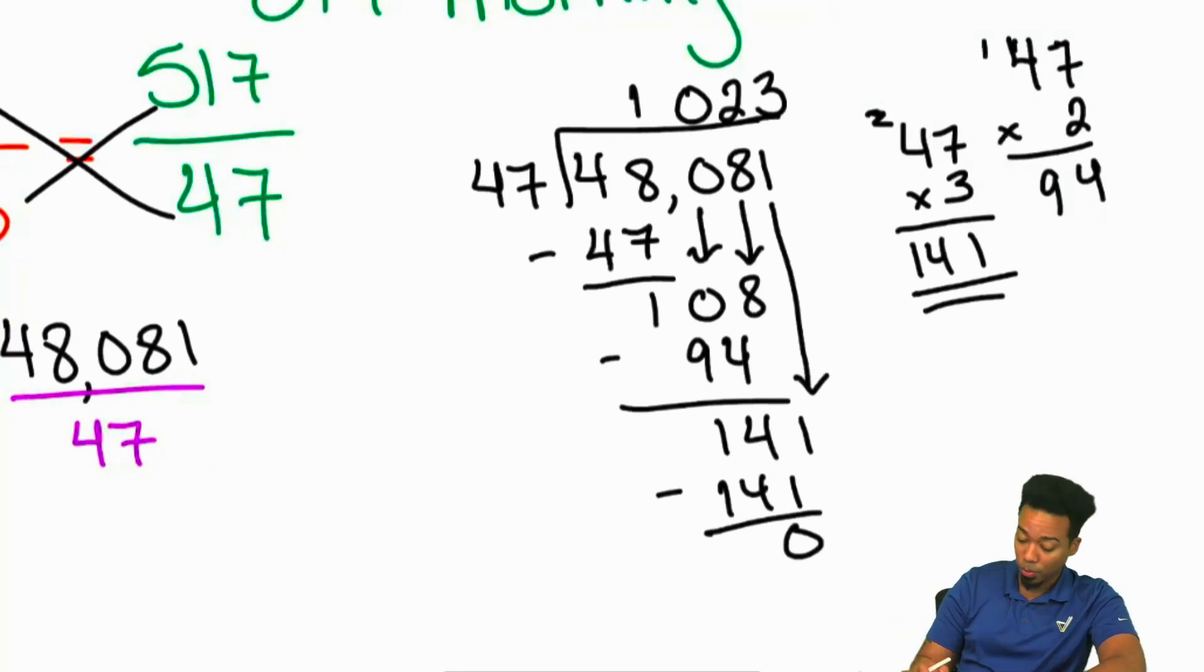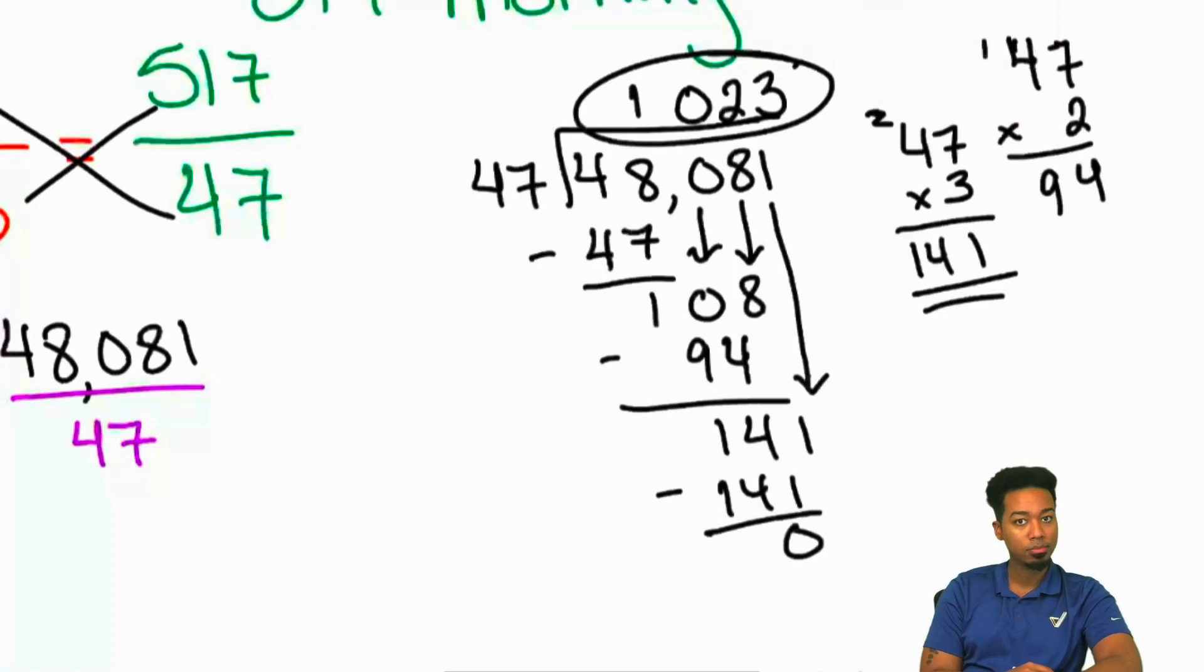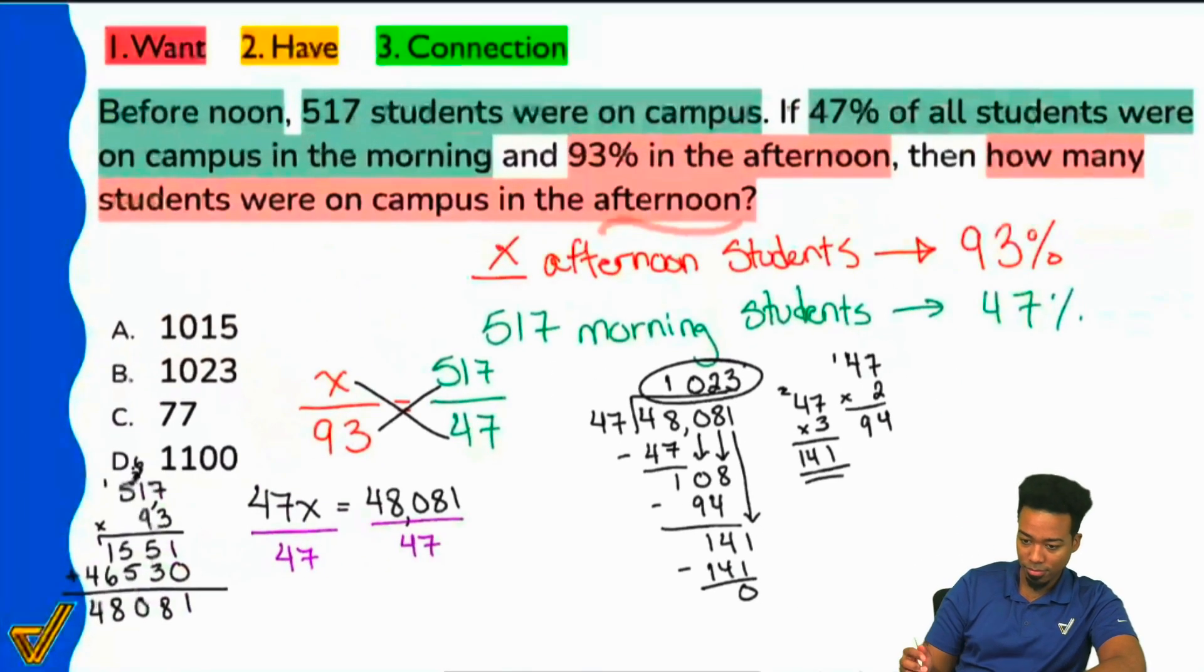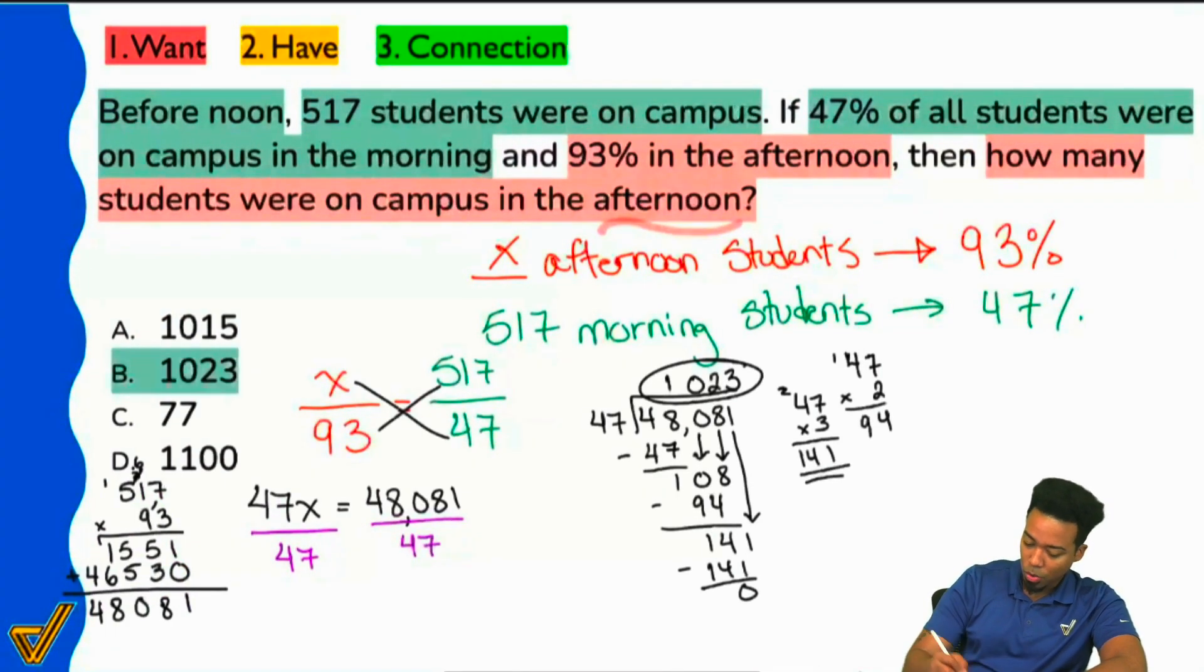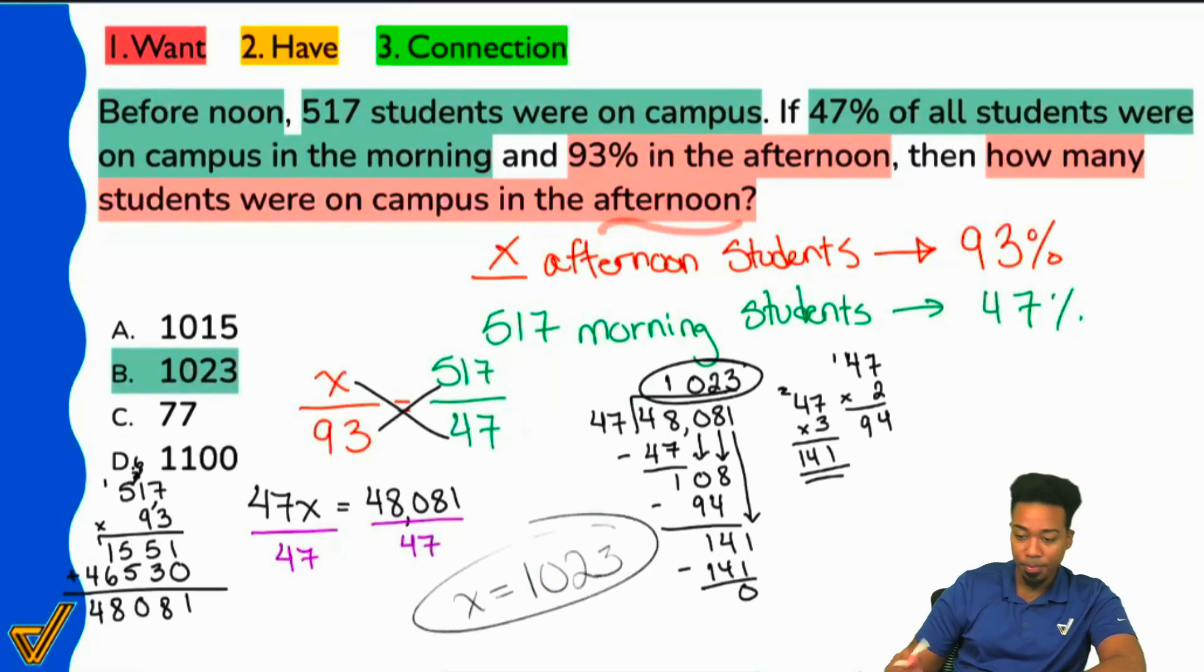And so our final answer everybody would be 1,023. And boom, we're good. There's our answer right over here, B, 1,023. Again, that's because x here equals 1,023.